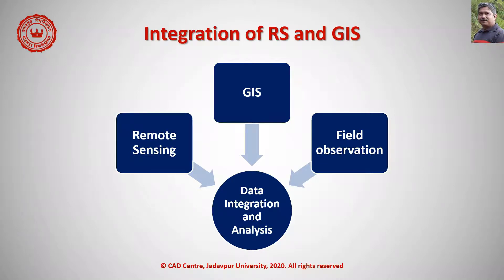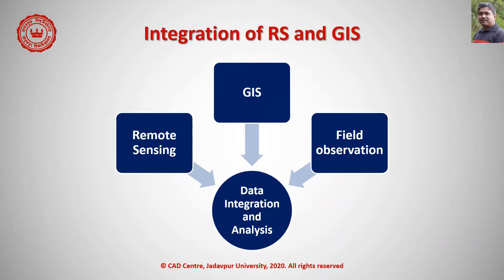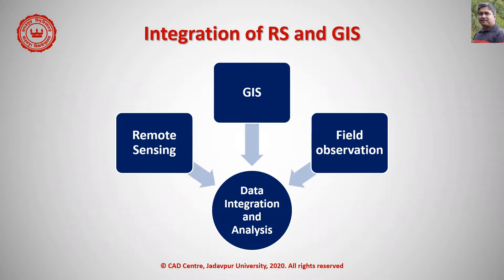GIS and remote sensing can revolutionize the concept of spatial data analysis and visualization. The combination of data of different types from different sources is the pinnacle of data integration and analysis. In a digital environment where all data sources are geometrically registered to a common geographic base, the potential for information extraction is extremely wide. Integration with GIS allows synergistic processing of multi-source spatial data — any data source which can be referenced spatially can be used in this environment.